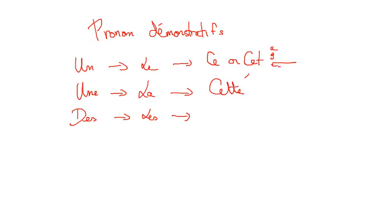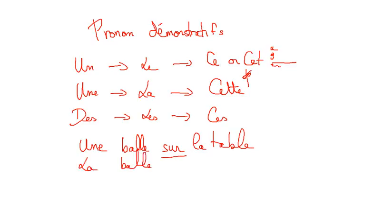Cet and cette, yes they sound the same but they're not the same. And say ce. If I say une balle sur la table, of course we know this means a ball or one ball on the table. If I want to say the ball on the table, we will say la balle sur la table.